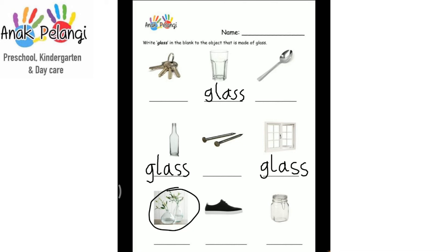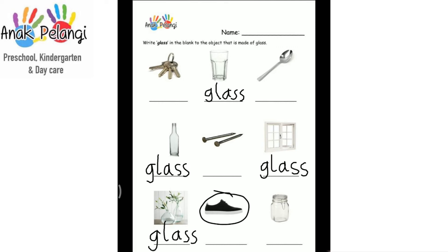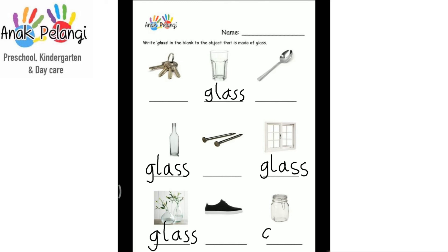The vase. Is it made of glass? Yes. Write glass. The shoe. Is it made of glass? No. The jar. Is it made of glass? Yes. Write the word glass.